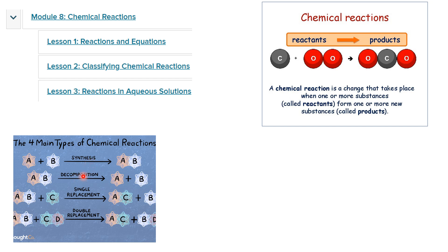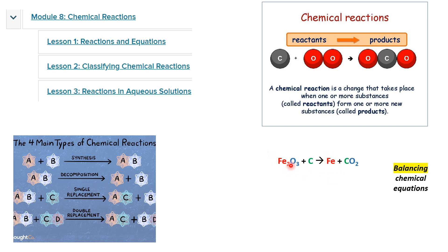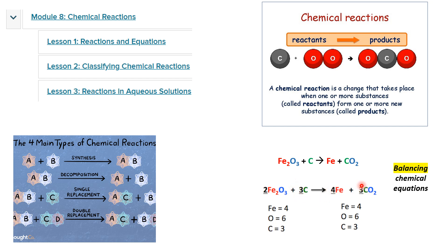We studied the four main types of chemical reactions: synthesis, decomposition, single replacement — with a compound and an element — and double replacement — with ionic compounds or salts, where ions switch their places. We learned how to balance chemical equations; for example, balancing Fe and O by adding coefficients — the numbers we put in front of the substances in a chemical reaction — to get a balanced chemical equation.